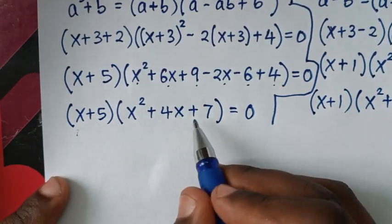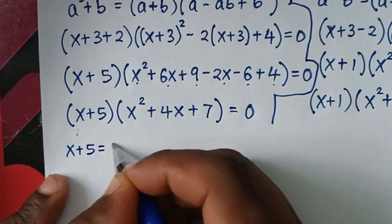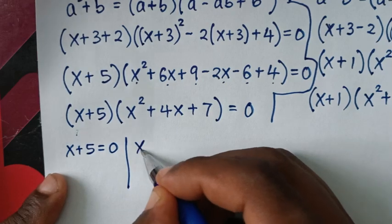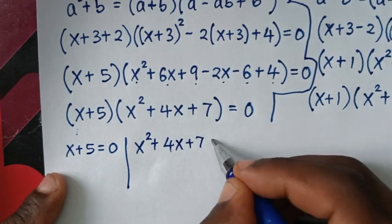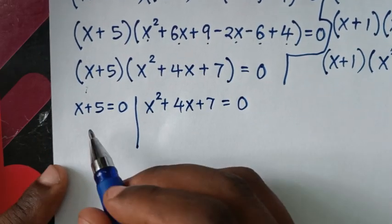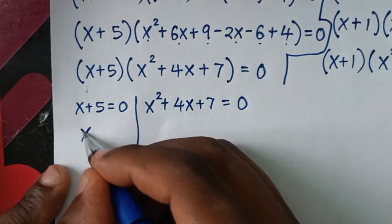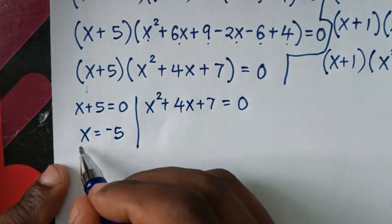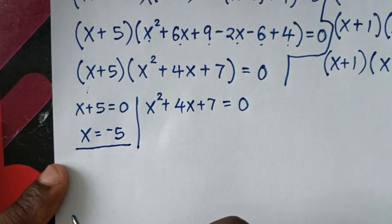From the first factor pair we have two solutions. First solution: x + 5 = 0, and second solution: x² + 4x + 7 = 0. From the first, we take 5 to the right side, so x = −5. This is the first real solution.